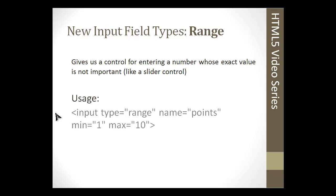Range is another cool one. It gives us a control for entering a number whose exact value is not important. It's basically a little slider control that you would slide to get the values. We'll be implementing these different input types in the programming part of this section. You'd have the type range, and then you could actually specify a minimum and then a maximum, and you'd have a slider that would go in between those ranges.